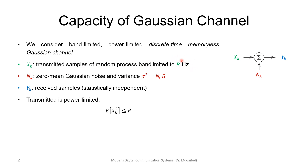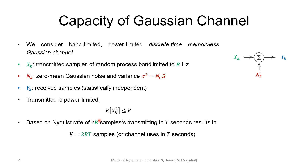The bandwidth is limited to B. The noise has zero mean and is Gaussian, with variance given by N₀ times B — that is, watts per hertz times the bandwidth. So the variance of the noise is N₀B. The output is the received samples, which are statistically independent, and the power is limited.